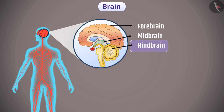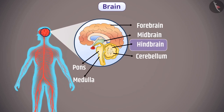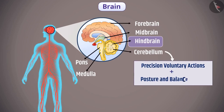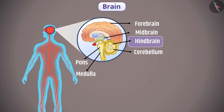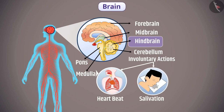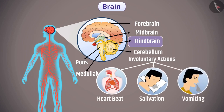The hindbrain is made up of pons, medulla, and cerebellum. The cerebellum controls the precision of voluntary actions and the posture and balance of the body. The medulla controls all involuntary actions like heartbeat, salivation, and vomiting, which are not in our control. The spinal cord is present below the medulla.